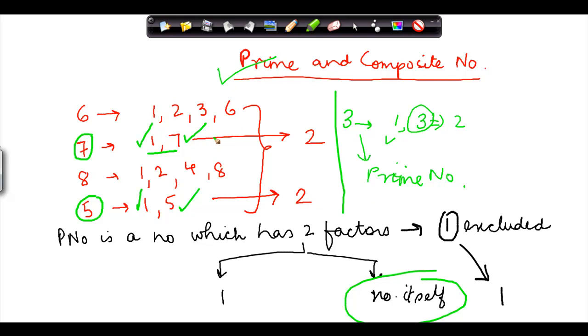This was insofar as prime number is concerned. Now what do we mean by composite number? A composite number is a number which has more than 2 factors. 6 is a composite number because 6 has 4 factors. 8 is a composite number because 8 has 4 factors. So a composite number is a number which has more than 2 factors, and therefore these are known as composite numbers.